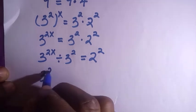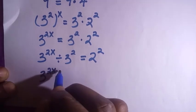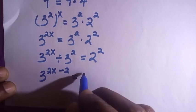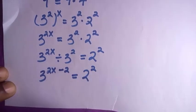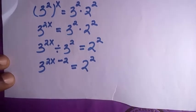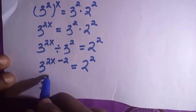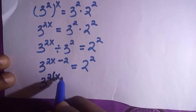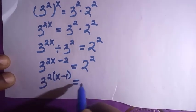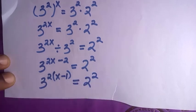We have 3 raised to the power of 2x minus 2 equals to 2 raised to the power of 2. And from here, 2 is common, so by taking it out, we have 3 raised to the power 2 bracket x minus 1 equals to 2 raised to the power of 2.